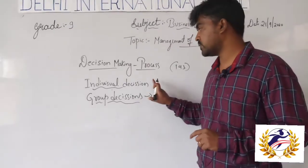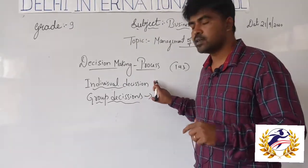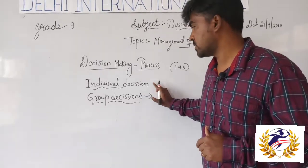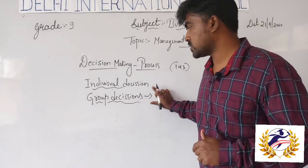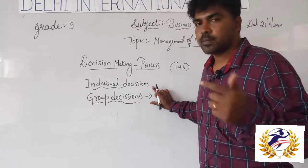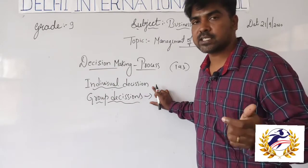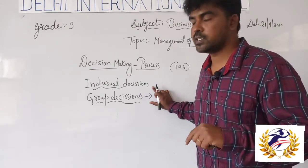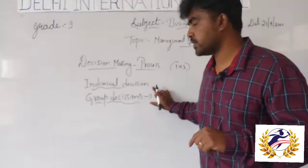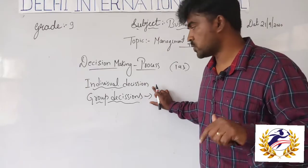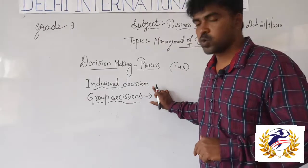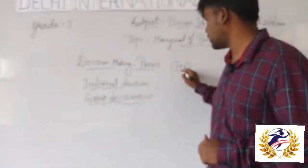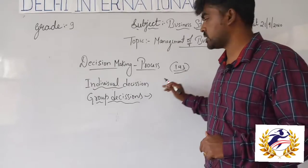To summarize: individual decisions mean a single person or higher authority is going to take decisions. Group decisions mean they will hold meetings, do discussions, and come to a conclusion — that is called a group decision. Regarding this there will be information in your textbook on page number 143.